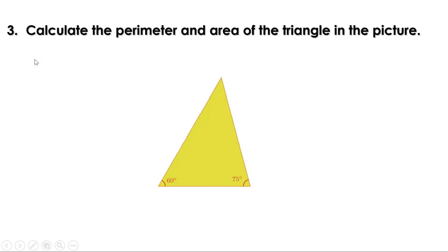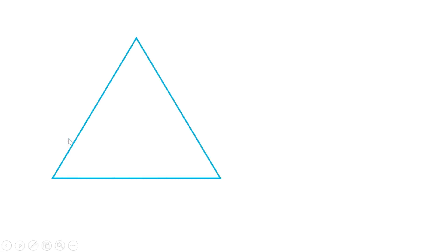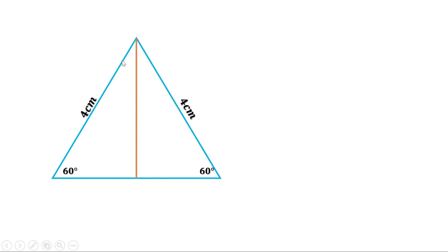Calculate the perimeter and area of the triangle in the picture. First, let us take an equilateral triangle with sides 4 centimeters. All three sides are 4 centimeters. We know all three angles of an equilateral triangle are 60 degrees. Now let me draw a perpendicular from one vertex to the opposite side. It bisects the angle and bisects the side, so each half-angle is 30 degrees and each half of the base is 2 centimeters.